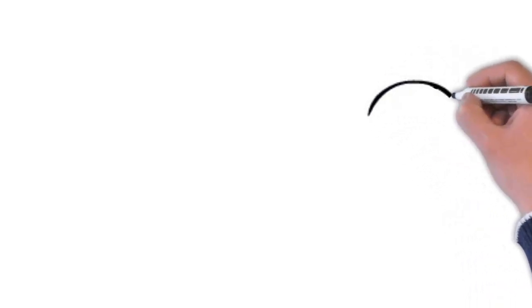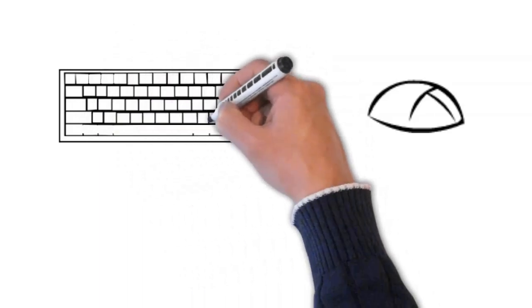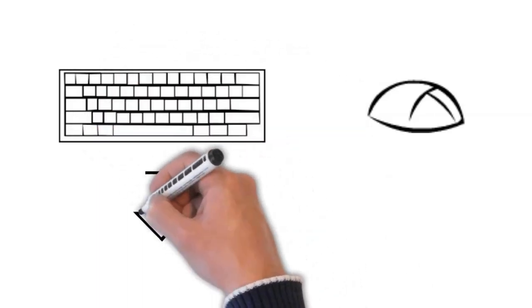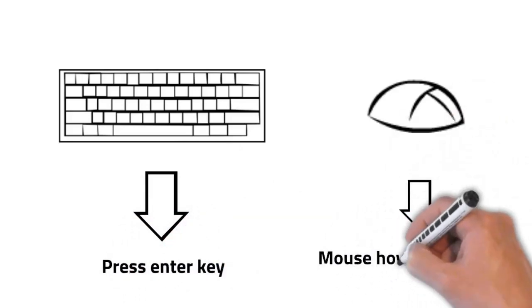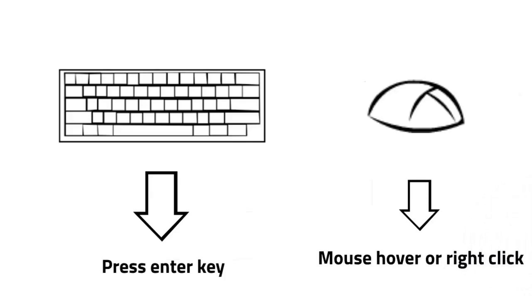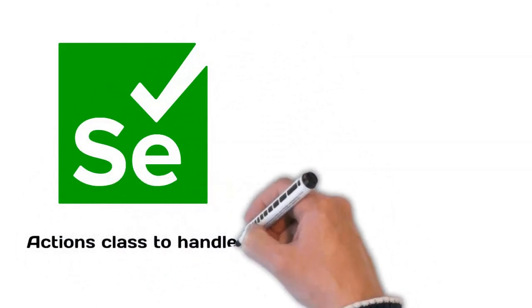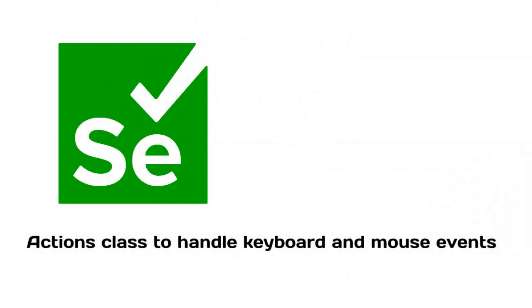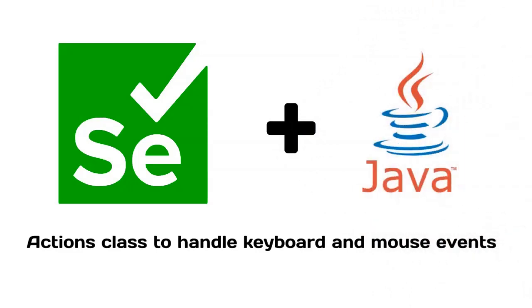Hi friends. Ever so often while automating, we come across scenarios where we have to perform certain activities which explicitly require the usage of mouse or keyboard. The most common example would be pressing the enter key to submit a form, or performing a mouse hover to reveal a dropdown or submenu. To handle such cases, Selenium provides us the Actions class, which can handle all actions related to keyboard and mouse interactions. Let's have a look at its implementation in Java.